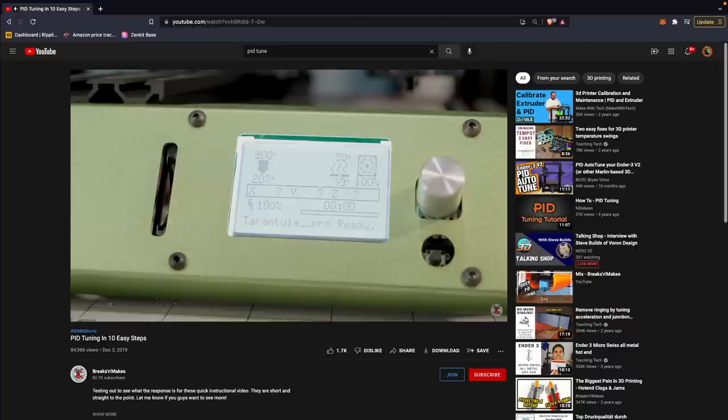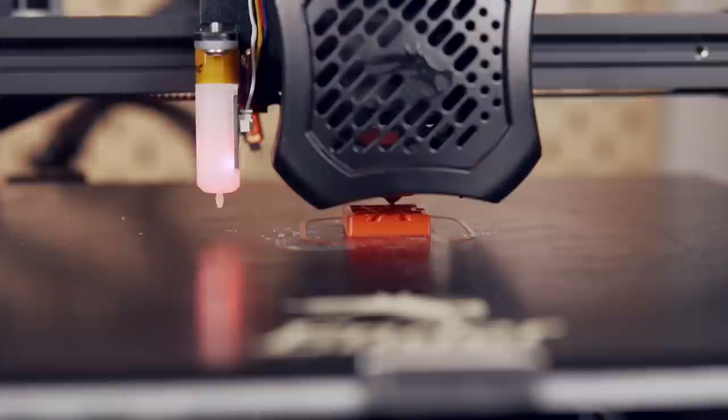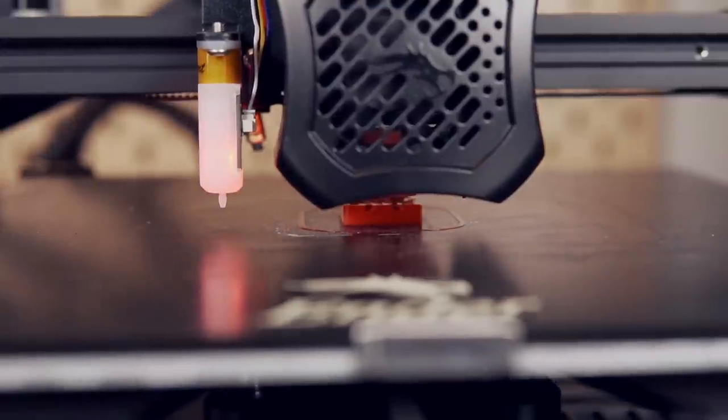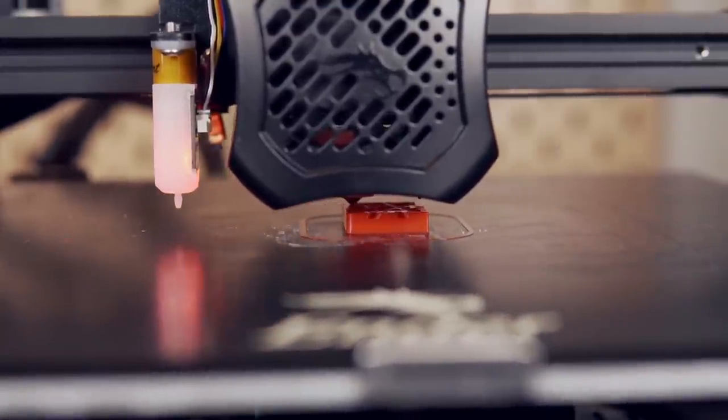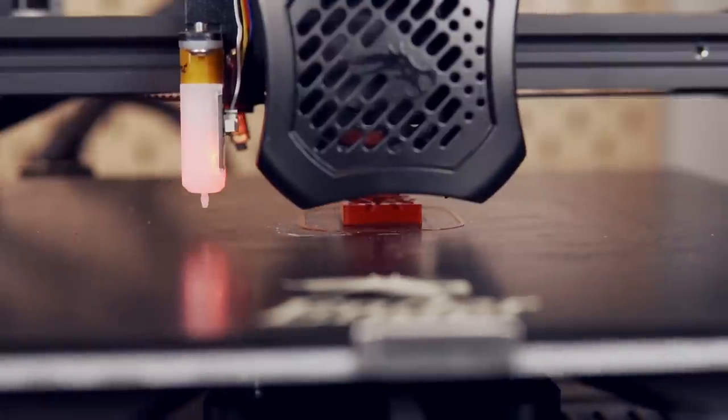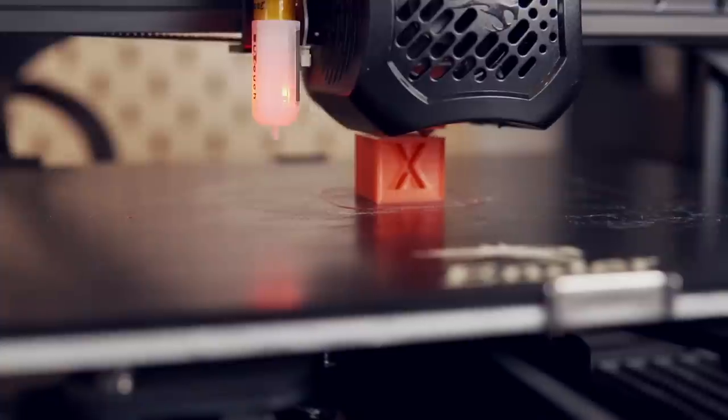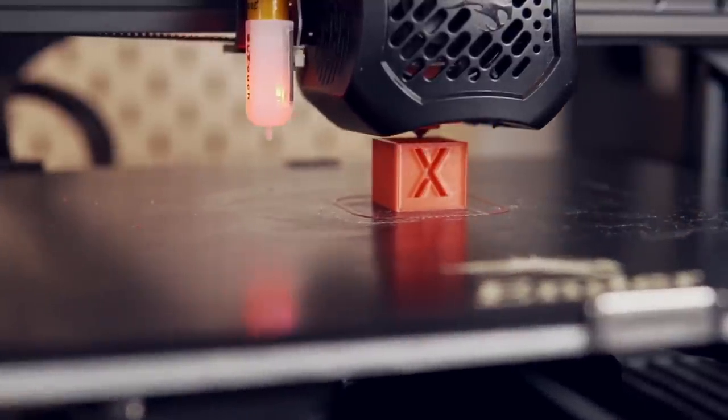Aside from that, you might need to slightly adjust temps in your slicer, and like me, if your firmware capped at 260 celsius for the max temp and you want to print hotter, you'll want to adjust that in the Marlin firmware, which is something I've covered in previous videos so I don't plan on making a full video on that.